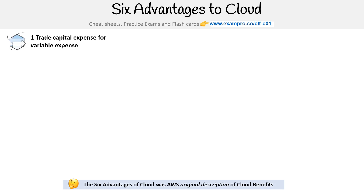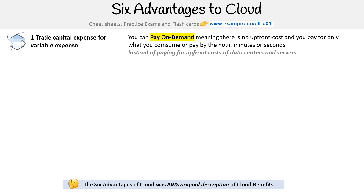The first advantage is trade capital expense for variable expense. You can pay on demand, meaning there is no upfront cost, and you pay for only what you consume — by the hour, minutes, or seconds — instead of paying for upfront costs of data centers and servers.